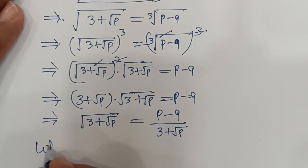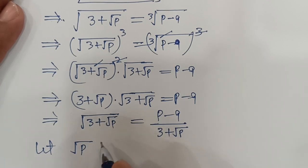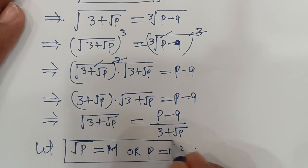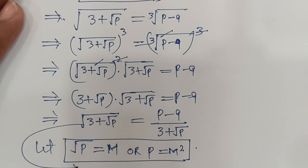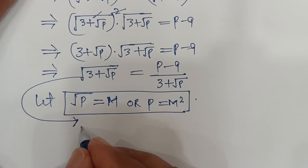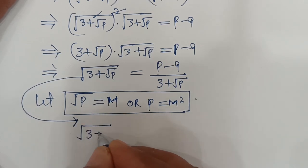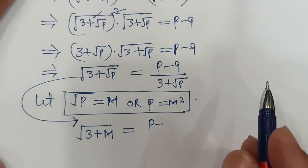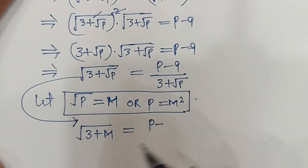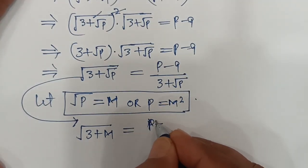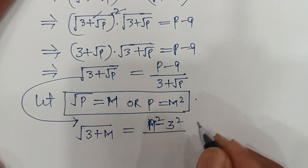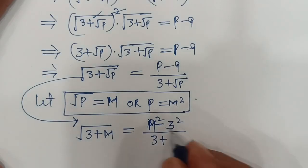Let square root of p equal m, so p equals m squared. Then the equation becomes: square root of (3 plus m) equals (m squared minus 9) divided by (3 plus m), and since m squared minus 9 equals (m minus 3)(m plus 3), this simplifies using (3 plus m) in the denominator.